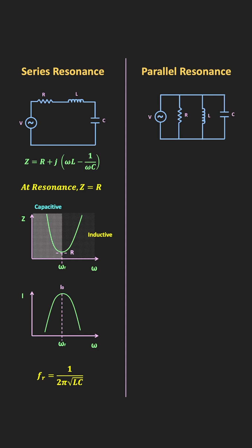Similarly, for this parallel RLC circuit, this is the equivalent admittance of the circuit. At resonance, the inductive and the capacitive susceptance will cancel out each other. Therefore, the admittance of the circuit will be minimum, or in other words, the impedance of the circuit will be maximum. And this impedance will be purely resistive.